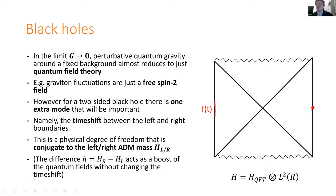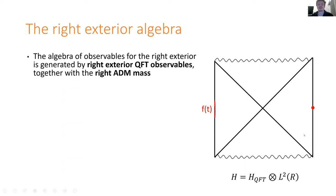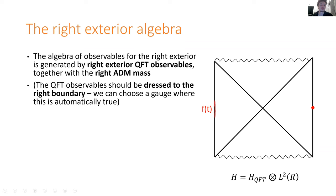The whole Hilbert space can be thought of as a tensor product of the QFT Hilbert space with this extra L²(ℝ) degree of freedom that describes the time shift between the two sides. Whether we think of it as describing fluctuations in the time of the left boundary or the right boundary is a gauge choice. It's convenient to fix the time of the right boundary at T equals zero, so this time shift mode describes fluctuations in where T equals zero on the left boundary is. So it's described by some wave function over time.